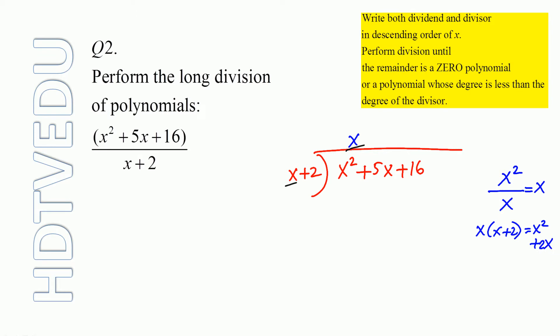x times x is x squared. And what is x times 2? 2x. Subtract x squared plus 2x. And what do we get? x squared minus x squared is 0. What is 5x minus 2x? 3x. Bring down 16.